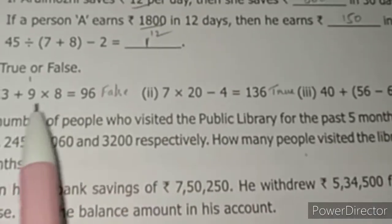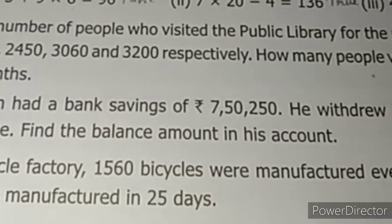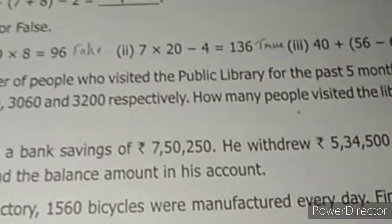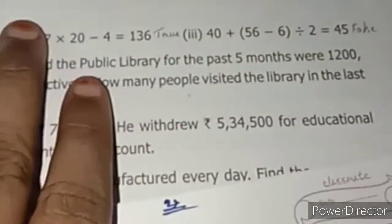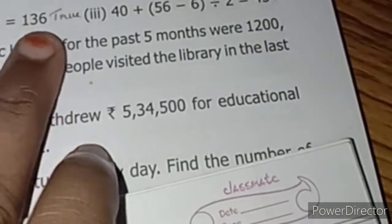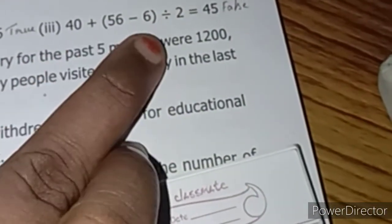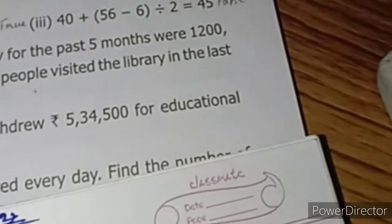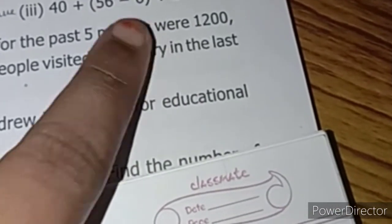True or false: 3 + 9 × 8 = 96 — false. By BODMAS, multiplication first: 9 × 8 = 72. Then 72 + 3 = 75, not 96. Next: 7 × 20 − 4 — multiplication first: 7 × 20 = 140. Then 140 − 4 = 136 — true. Next: 40 + (56 − 6) ÷ 2 — bracket first: 56 − 6 = 50. Then division: 50 ÷ 2 = 25. Then 40 + 25 = 65, not 45 — false.